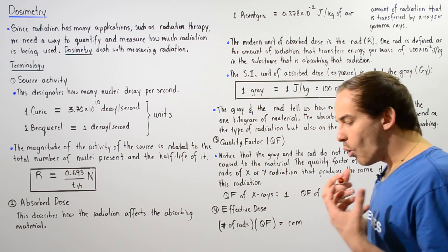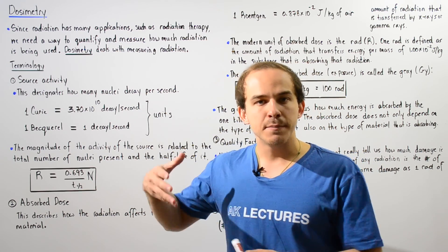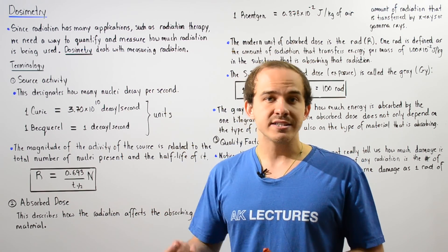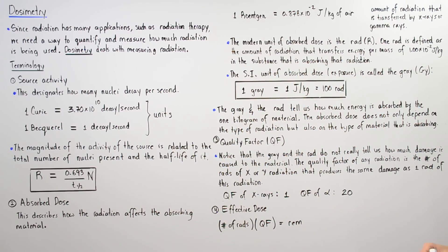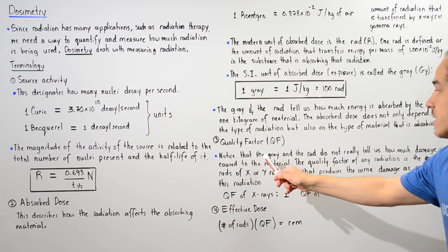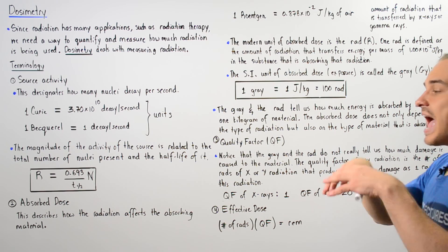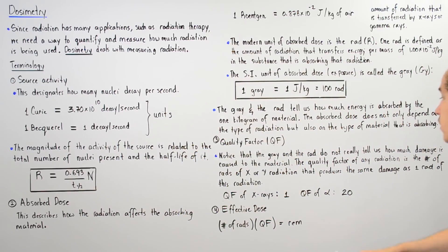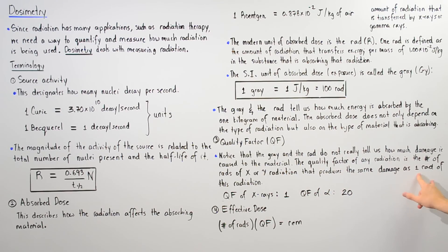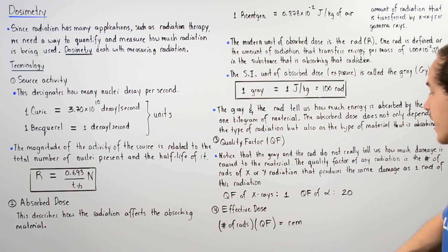The question is: what determines the actual damage caused by radiation? When radiation passes through matter, it damages that matter — breaking bonds and damaging the structure. Something called the quality factor (QF) is used to describe how much damage is actually caused. The gray and the RAD only tell us how much energy is absorbed, not how much damage results. The quality factor is the number of rads of X-ray or gamma radiation that produces the same damage as one rad of a given radiation type. We arbitrarily set the QF of X-rays or gamma rays equal to 1.